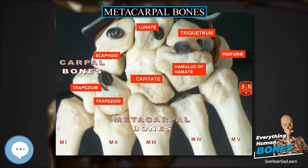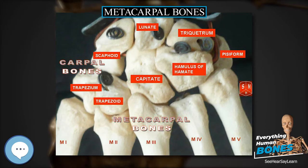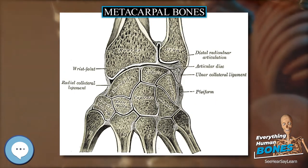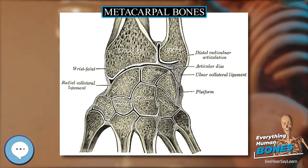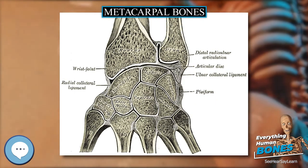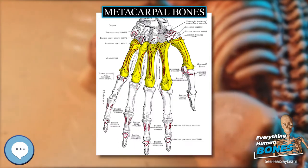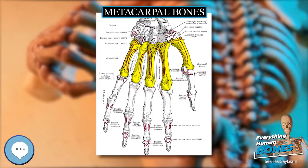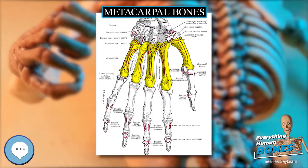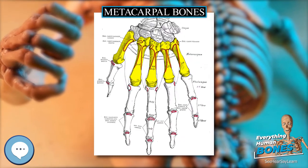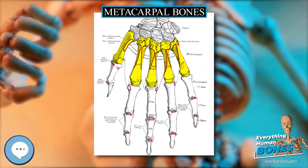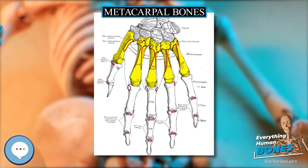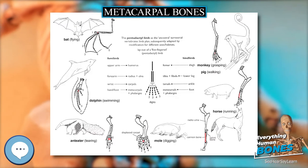Structure: the metacarpals form a transverse arch to which the rigid row of distal carpal bones are fixed. The peripheral metacarpals — those of the thumb and little finger — form the sides of the cup of the palmar gutter, and as they are brought together they deepen this concavity. The index metacarpal is the most firmly fixed, while the thumb metacarpal articulates with the trapezium and acts independently from the others.